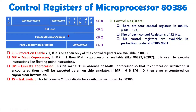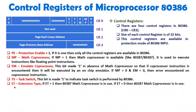Now I will explain the ET bit, the Extension Type bit. ET indicates which coprocessor is present. If ET equals 1, the math coprocessor is 80387. If ET equals 0, the math coprocessor is 80287. So you can have a coprocessor of either 80387 or 80287: ET equal to 1 means 80387, and ET equal to 0 means 80287.